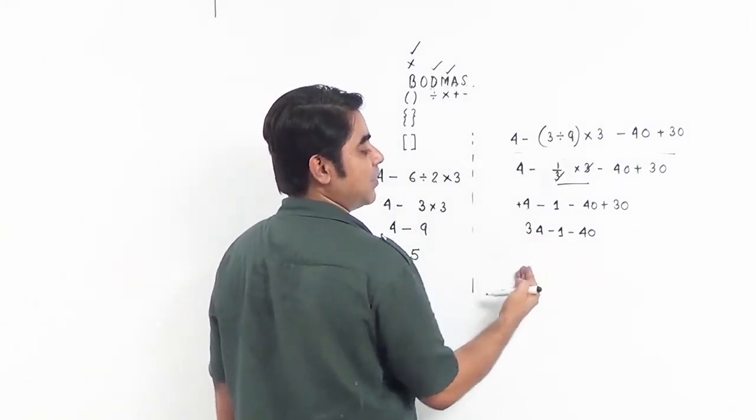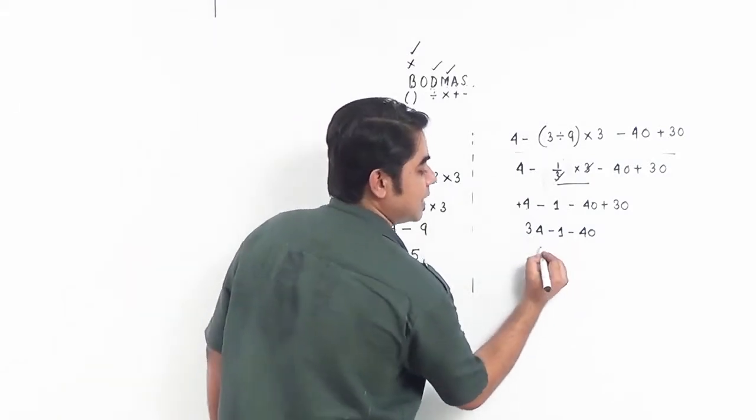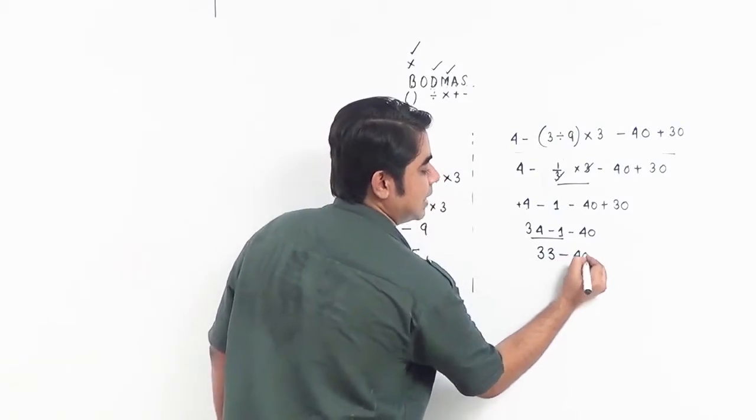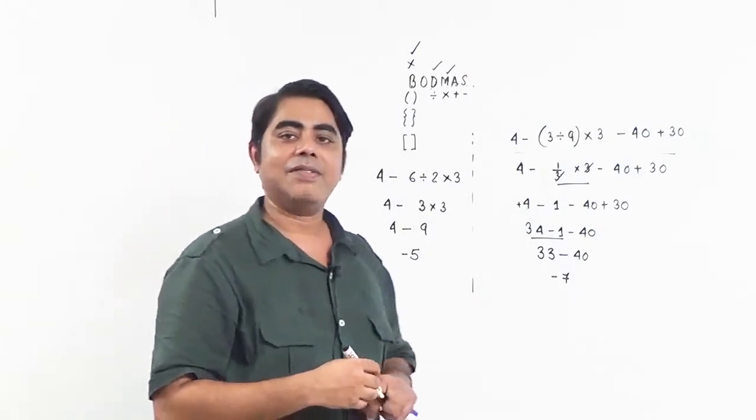We'll do the first subtraction, 34 minus 1. This becomes 33 minus 40, and finally 33 minus 40 gives us minus 7.